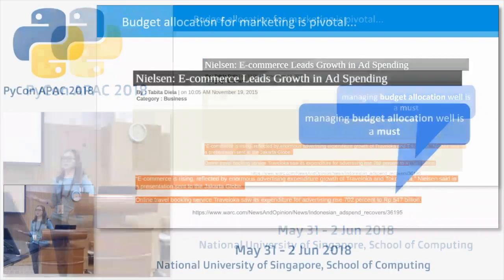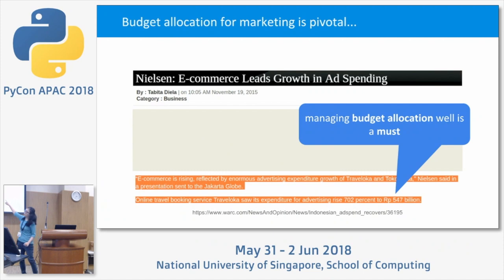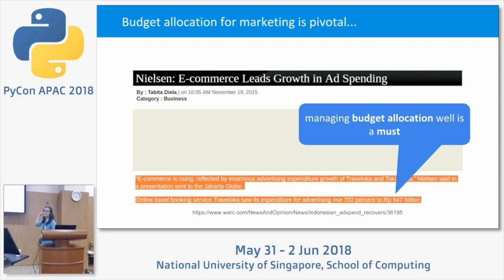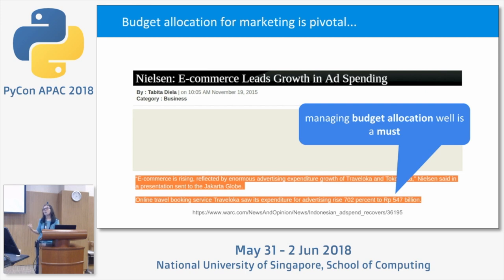Why the marketing channel problem? The figure mentioned has a lot of zeros behind it — it's no longer a trivial problem. We need to be wise about budget allocation, not just because it's about money, but because it's related to how our company will grow in the future and maintaining financial stability.